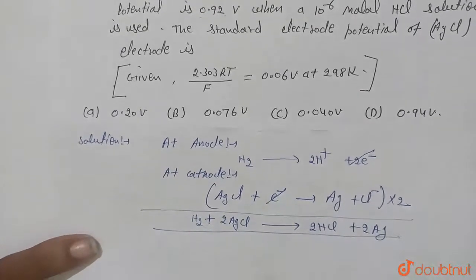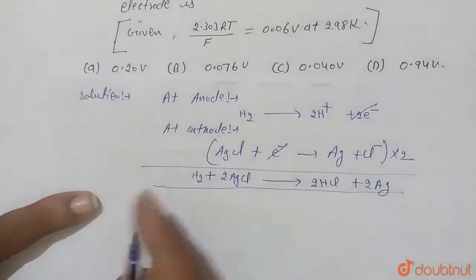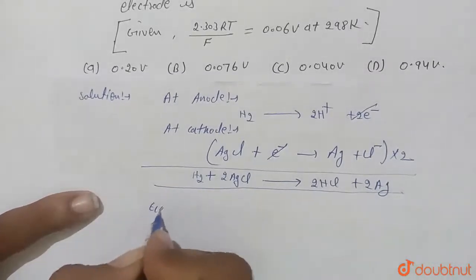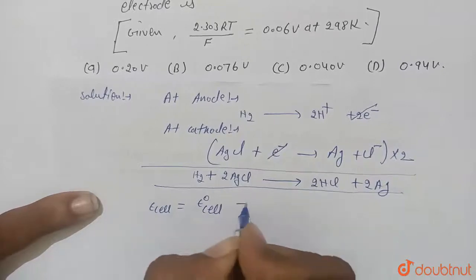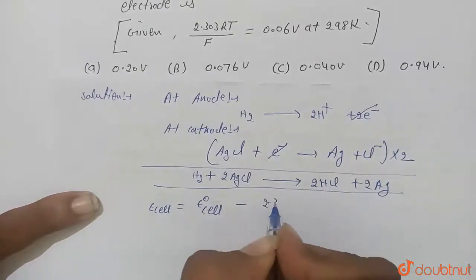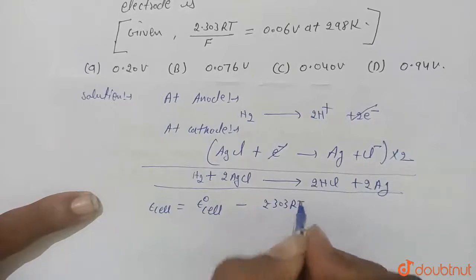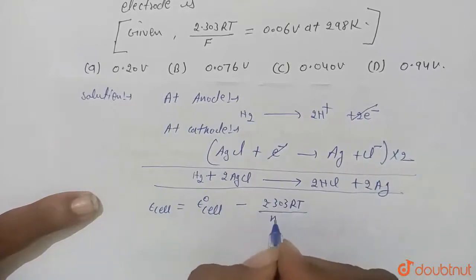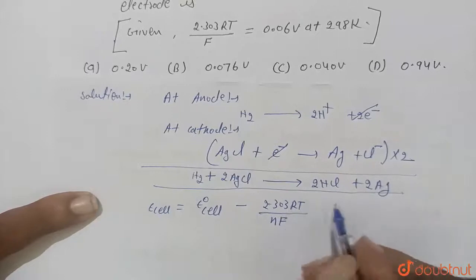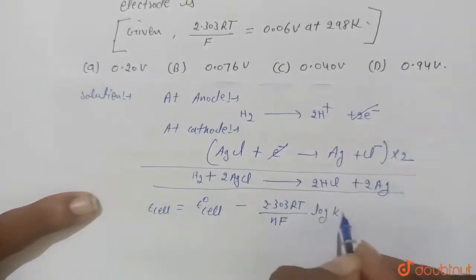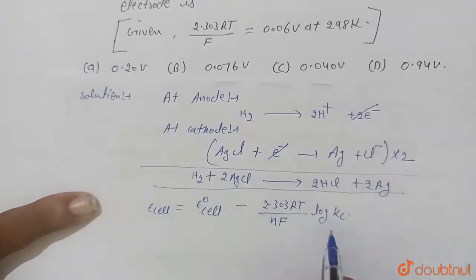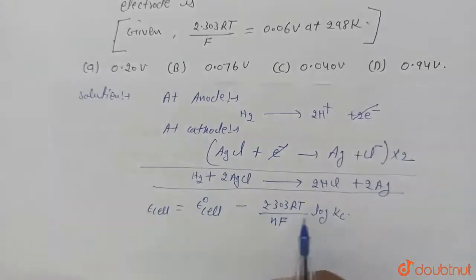Now we calculate E cell for this reaction. E cell will be E naught cell minus 2.303RT divided by nF log Kc. Kc means equilibrium constant. Here R will be gas constant, n will be number of electrons transferred, and F will be Faraday.